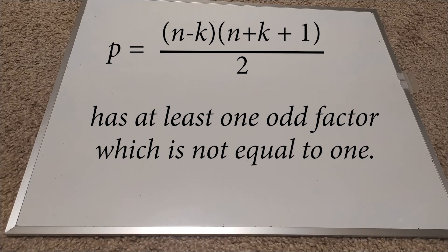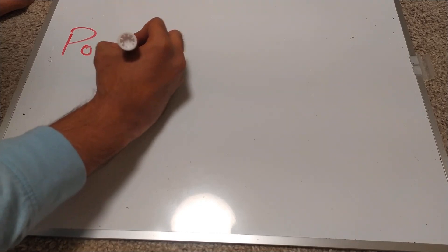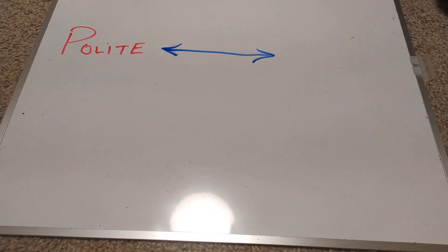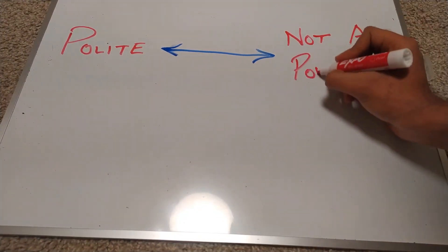The numbers that don't have a non-one odd factor are numbers with all even factors, which are exactly powers of 2. And there you have it. A number is polite if and only if it's not a power of 2.